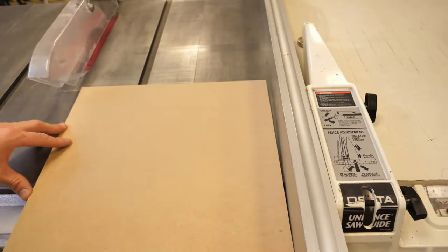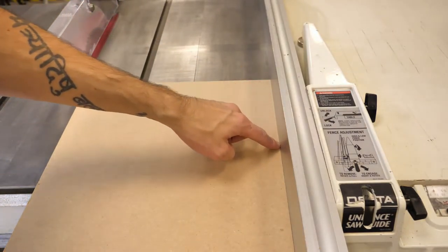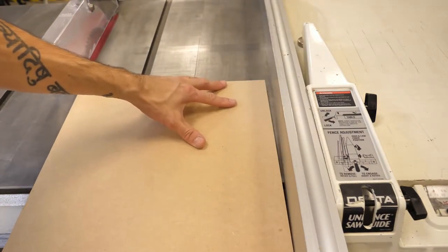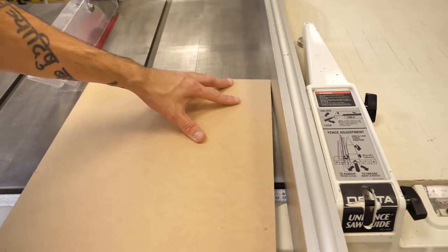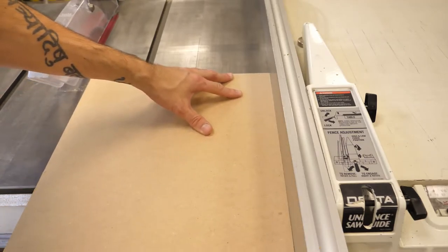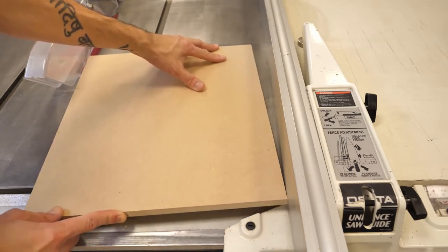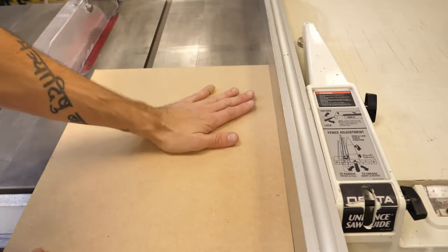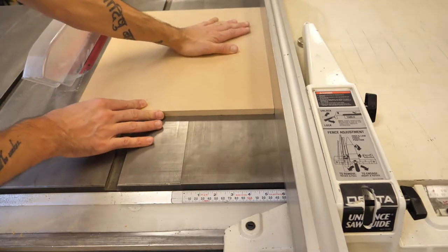Speaking of kickback, we want to make sure that our wood is flush up against the fence when we're cutting. If it's not, it can get crooked and that will also cause kickback or it will cause your part to burn on the blade because it'll be rubbing. So we want to make sure it's flush up against that fence.